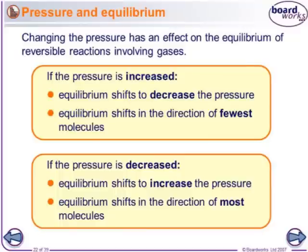Changing the pressure has an effect on the equilibrium involving gases. If the pressure is increased, the equilibrium shifts to decrease the pressure — it shifts in the direction of fewest molecules. If the pressure is decreased, the equilibrium shifts to increase the pressure — it shifts in the direction of most molecules, taking up more space to re-establish the pressure.